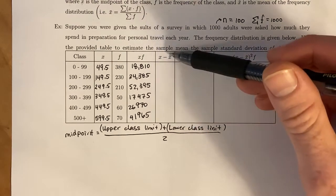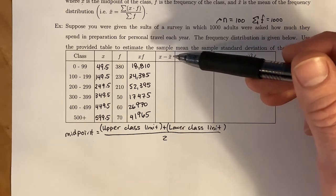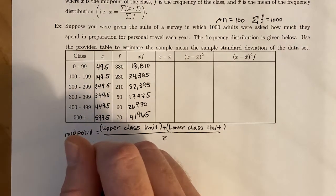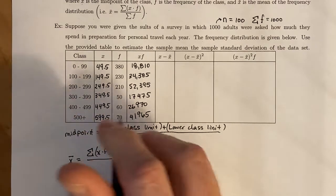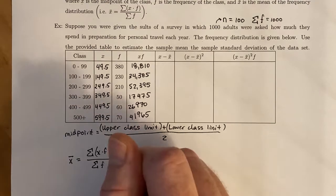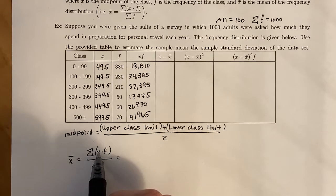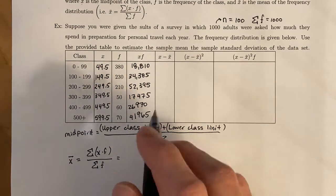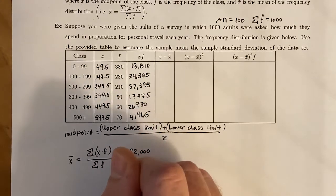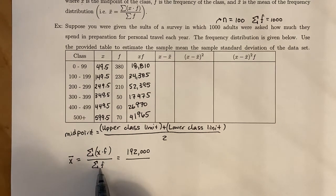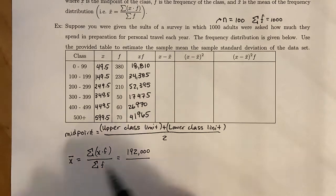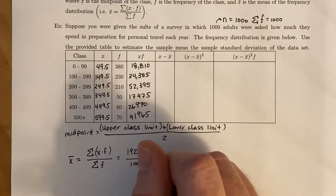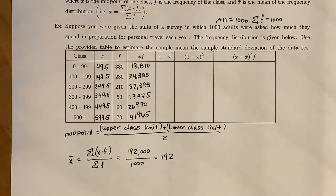Before we can move into the next column where we find the deviation, we need to figure out what the mean of the frequency distribution is. I'm going to figure out X-bar, which is the sum of X times F over the sum of the frequencies. X is the midpoint of each class, F is the frequency of that class. We add up this entire column, which gives us 192,000, over the sum of the frequencies, which should add up to 1,000. If you do that division, you get that the mean of the frequency distribution is 192.